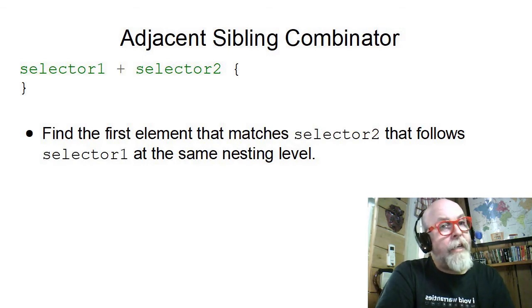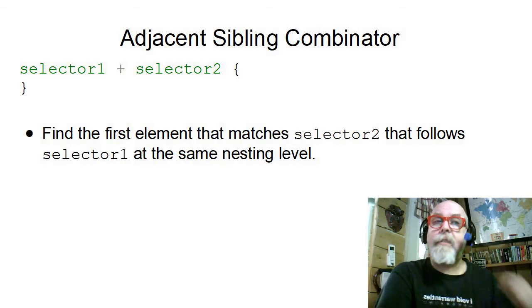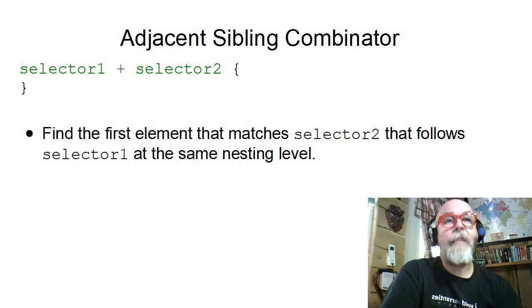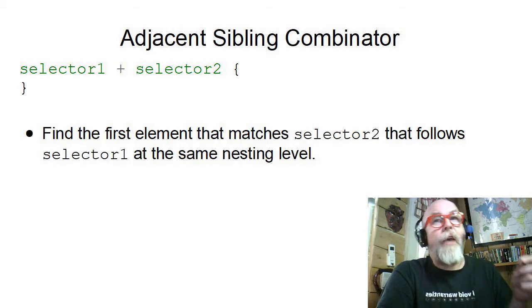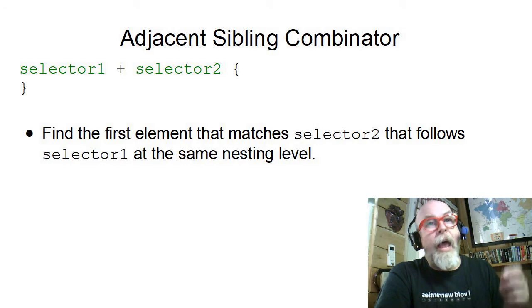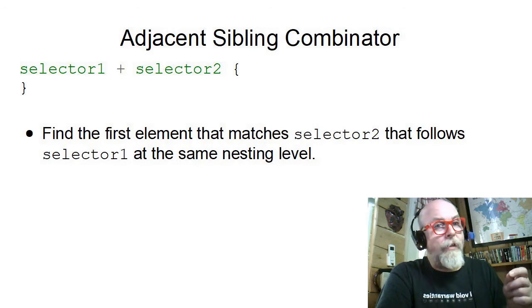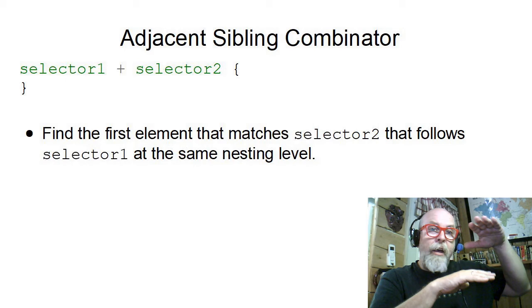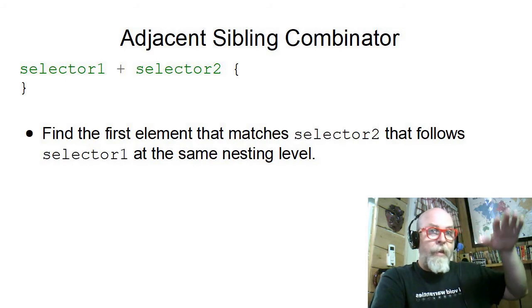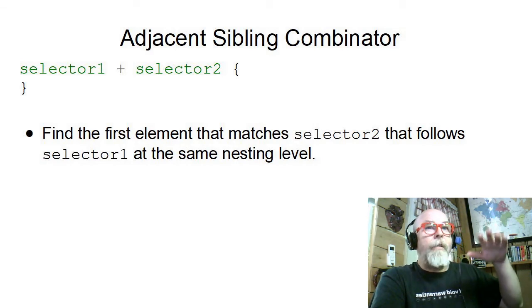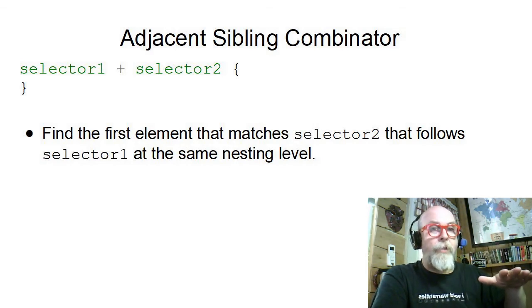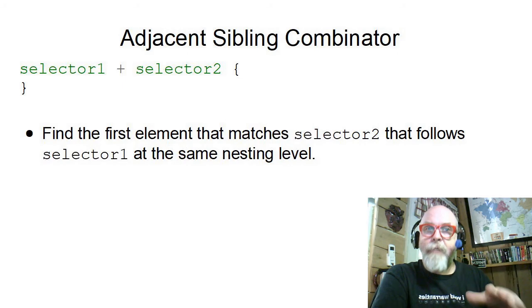The adjacent sibling combinator is the plus. What that says is find the first element of type 2, of selector 2, that follows the selector 1 at the same level. So you can think of their children within a parent, and they're all the same level children. So that would be find the next brother or sister.